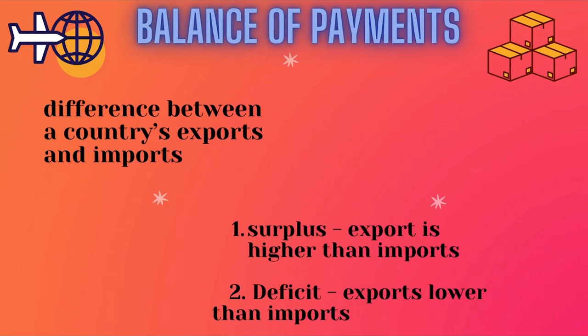The fourth objective is Balance of Payments, which is the difference between a country's exports and imports. An import is when goods and services are bought from another country; an export is when goods and services are sold to another country. A balance of payments surplus is when the value of exports is higher than imports. A balance of payments deficit is when the value of exports is lower than imports.